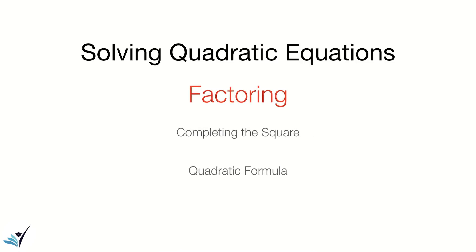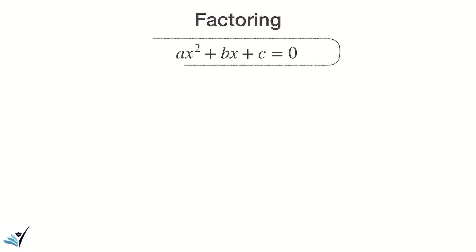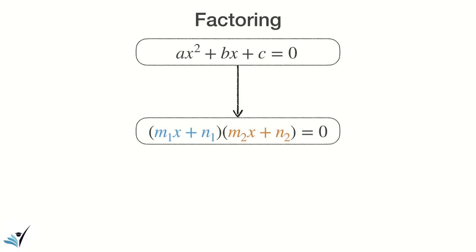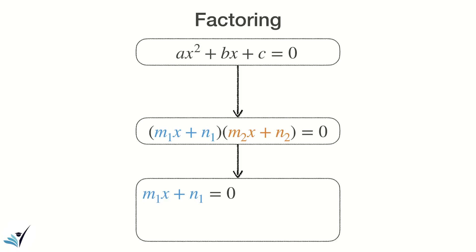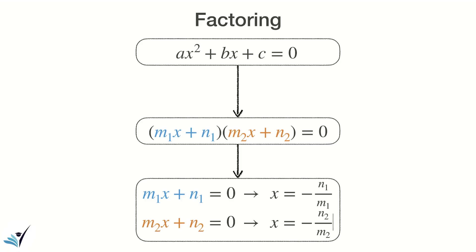In this video, as mentioned earlier, we wanted to talk about factoring and how you can use it to solve quadratic equations. In factoring, the objective is to convert the quadratic equation into a multiplication of two factors. Each factor is a linear equation in terms of x, and because the right-hand side is zero, each of these factors has to be zero. You set each factor equal to zero and solve for x, which is easy because you are dealing with two linear equations.